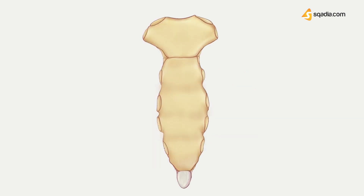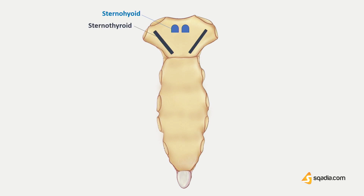Coming to the posterior part, imagine a little alien hidden behind the sternum. These two little eyes on the posterior surface give origin to the sternohyoid in the upper part, and these two arms are the origin of the sternothyroid in the lower part.